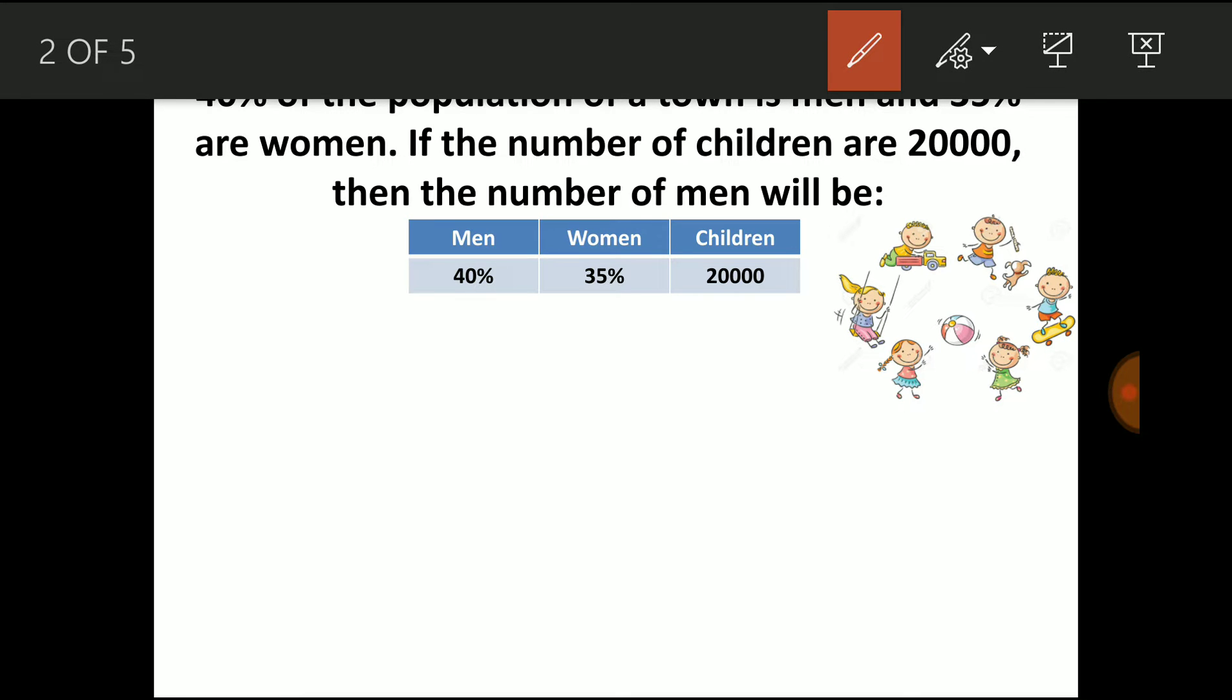So out of 100% population, 40% plus 35% gives 75%. So 75% are men and women. The remaining is 25%. So this 25% contributes the total number of children. So this 25% total count is 20,000.